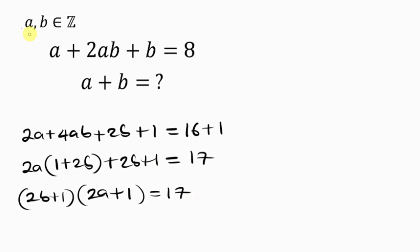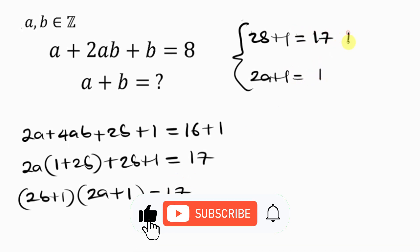And since A and B are integers—integers which can be negative or positive—that means we're going to be looking for the positive and negative factors of 17. So, let me factorize that here. We have 2B plus 1 and 2A plus 1 equal to the factors of 17 are: 17 times 1, that gives 17, then 1 times 17 is also 17.